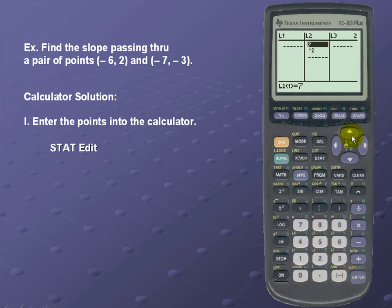To clear out our list 2 values simply go to the top of your column. You want to hit clear and enter.